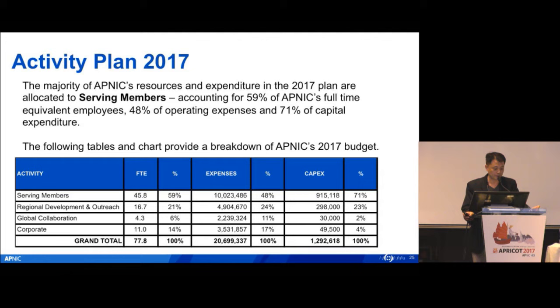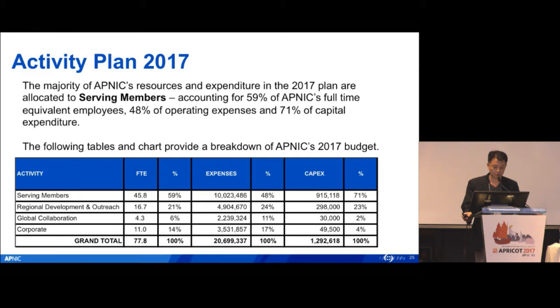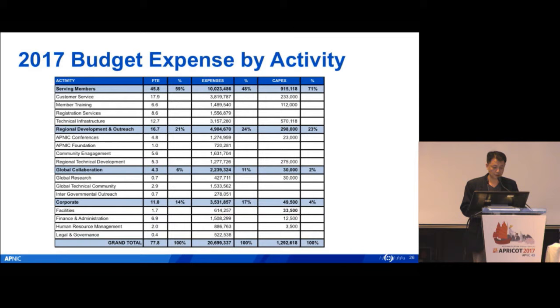The activity plan also includes serving members, regional development and outreach, global cooperation, and corporate. You can see most of the cost goes to serving members, including 45.8 full-time employees which is 59% of total FTE, and major expense is also in serving members.